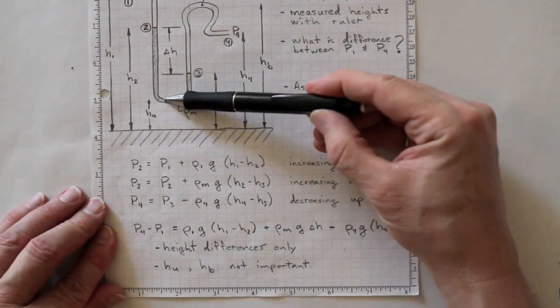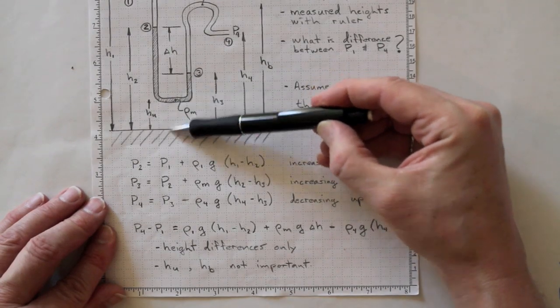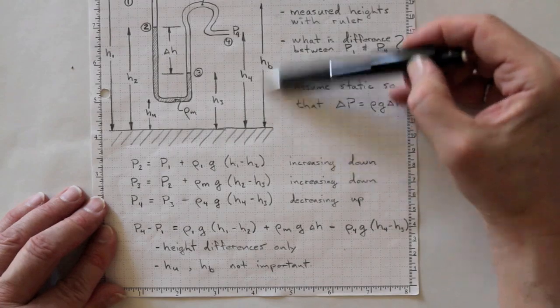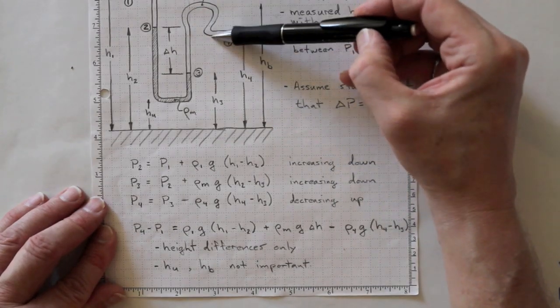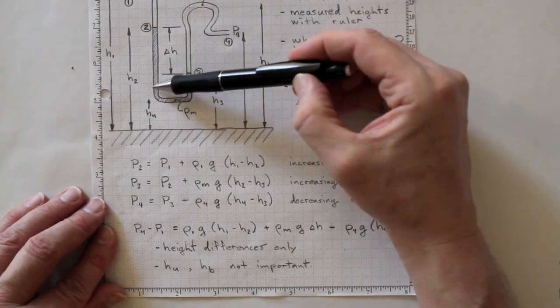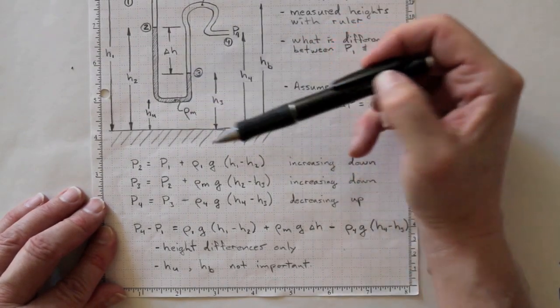Note that the HU down here, the height of the bottom of the U, and the HB up here, the height of the top of this bulge, don't matter. Loops around like that and down like this cancel out.